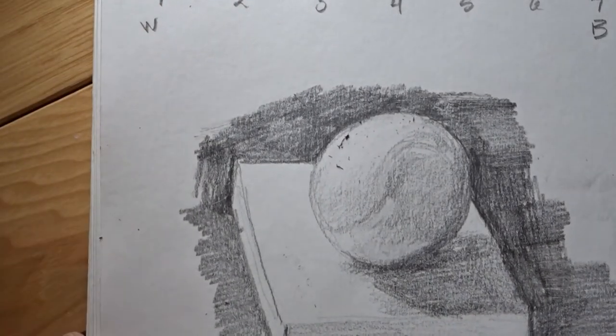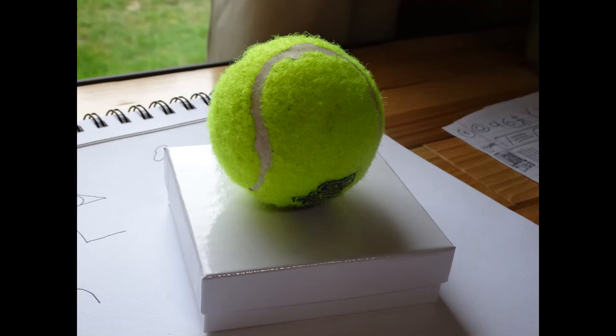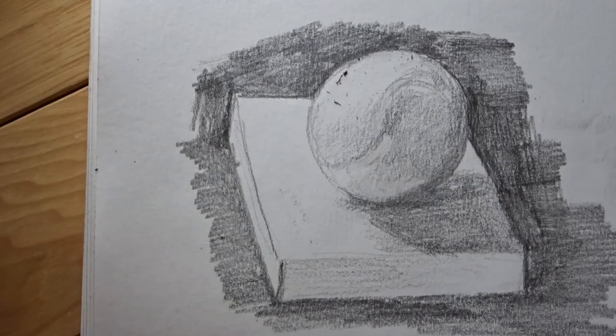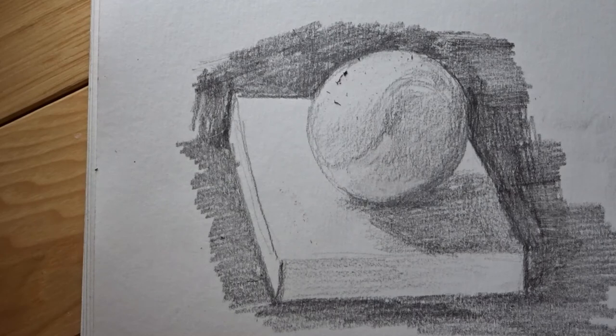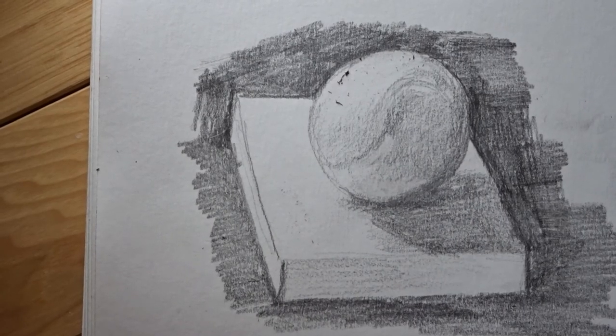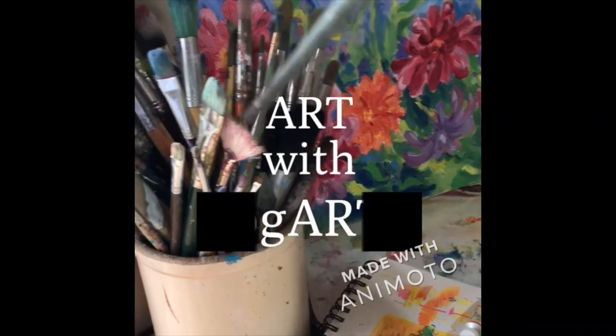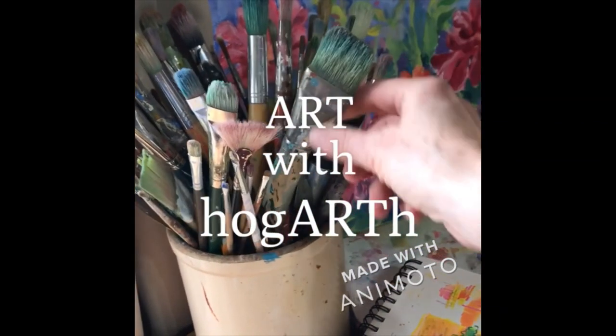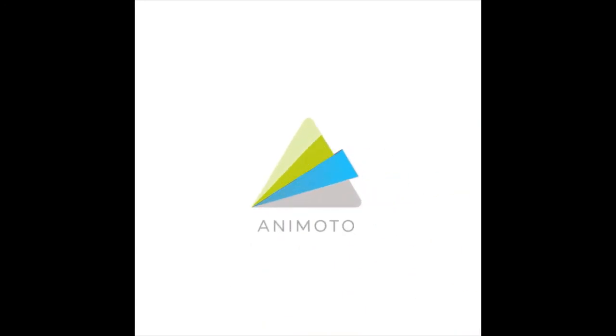And now you notice I've used all of those values that we did in the value scale in my tennis ball drawing. So find something fun to draw, set it on something, doesn't have to just be one thing, and do a value scale and then add those values to an actual object today. I'll see you next time.